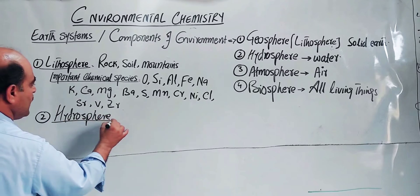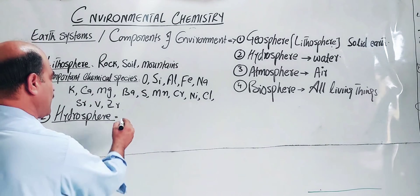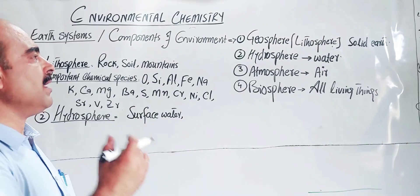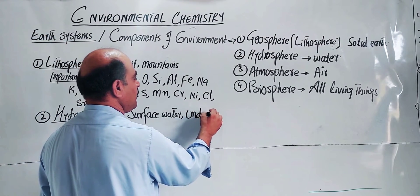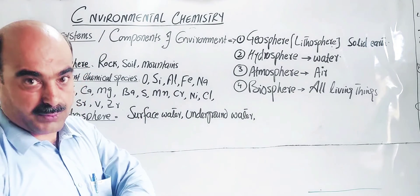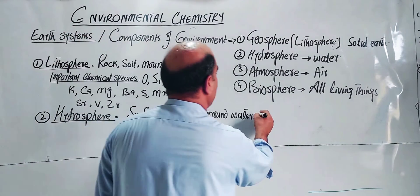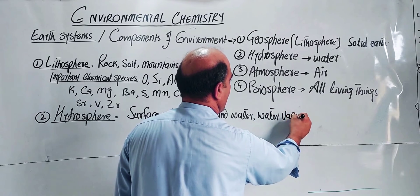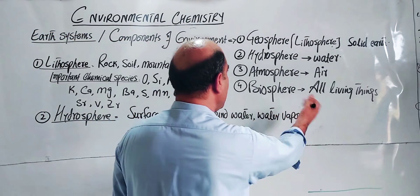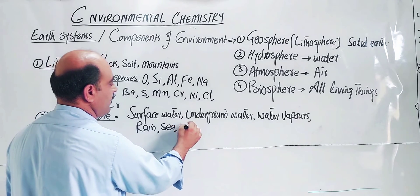The second component of environment is the Hydrosphere. Hydro means water. The Hydrosphere includes all water on the surface of the earth: surface water such as lakes, rivers, and oceans, as well as underground water. It covers seas, rivers, and oceans — all water bodies on and beneath the earth's surface.